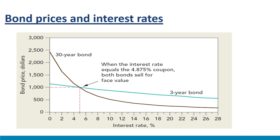Let us examine the price-interest rate relationship for two bonds with the same coupon of 4.875 percent. The impact of interest rate changes is modest on near-term cash flows but more drastic on distant cash flows. This is precisely why the price of a 30-year bond is much more sensitive to interest rate movements than a 3-year bond. For the 30-year bond, the fall in prices is particularly sharp at lower interest rates. The price of a fixed income security is inversely related to interest rates.